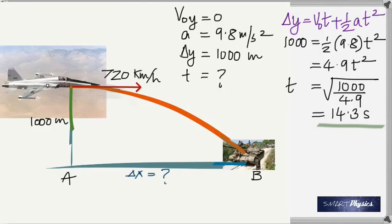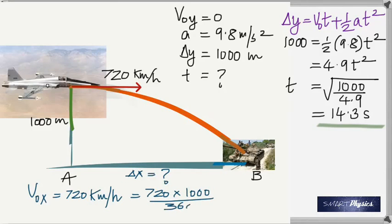But it's in the wrong units. It cannot be in kilometers per hour; we need to change it into meters per second. One kilometer is a thousand meters, so multiply by 1000. One hour is 3600 seconds. On doing that, you get 200 meters per second.